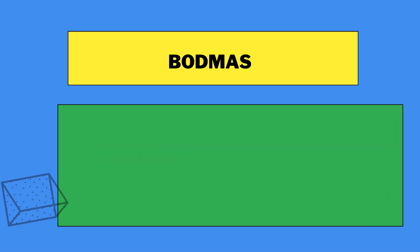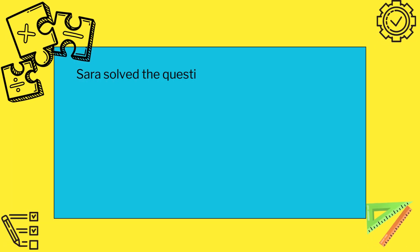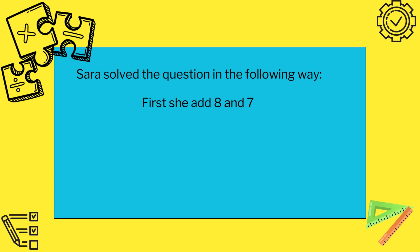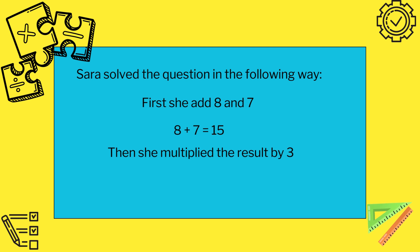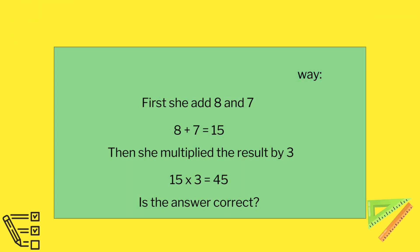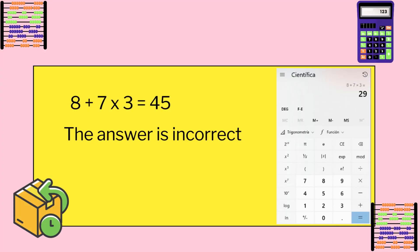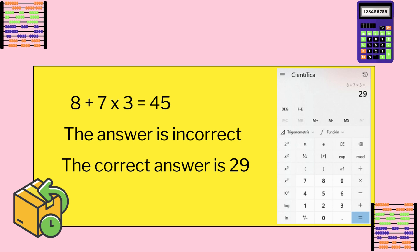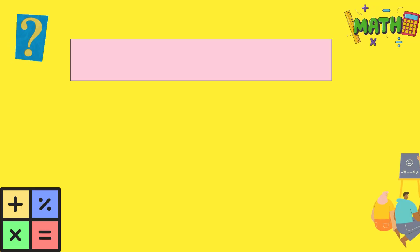Sara, one of the students, solved the question as follows: first she added 8 and 7 to get 15, then multiplied the result by 3 to get 45. But is this correct? The correct answer is actually 29, which means Sara has made a mistake. The question arises — what mistake did she make? BODMAS tells us the correct order of mathematical calculation.